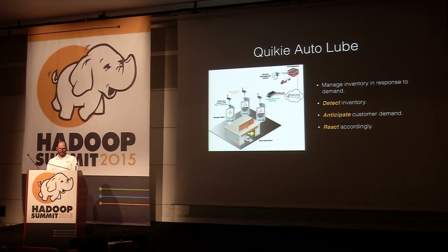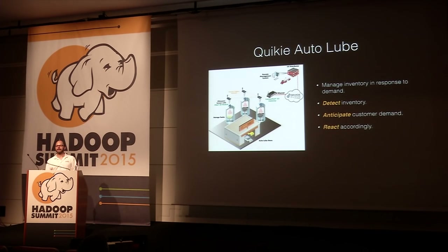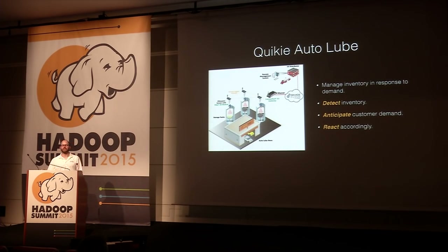Another use case is an auto lube — like a Jiffy Lube, a service station that changes oil. They need to manage inventory in response to demand. They detect their current inventory levels using sensors, anticipate customer demand, and react accordingly. They have storage tanks with motor oil and antifreeze, with wireless sensors and transmitters that monitor levels and transmit to a central computer, which analyzes the data and predicts when to order additional inventory — on demand, rather than stockpiling more than they need.